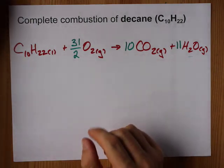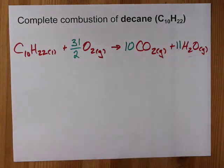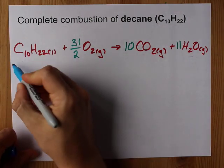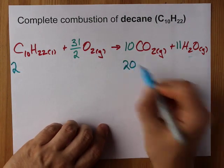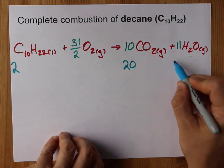If your teacher doesn't let you use fractions, your job is to double all of these coefficients. This 1 becomes 2. This 10 needs to become 20. This 11 becomes 22.